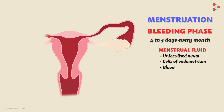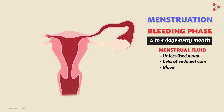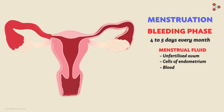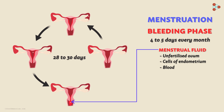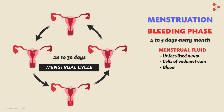The bleeding phase occurs every month because the entire process happens in a cyclic manner lasting 28 to 30 days. This cycle includes ovulation, the building up of the endometrium, and — if fertilization does not occur — the collapsing of the endometrium and discharge of menstrual fluid through the vagina. This entire cycle is called the menstrual cycle, which spans 28 to 30 days, with the bleeding phase lasting 4 to 5 days.